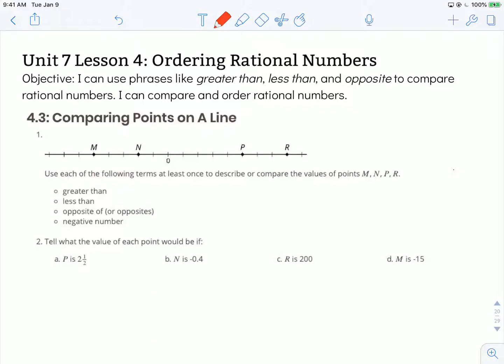The objective states: I can use phrases like greater than, less than, and opposite to compare rational numbers. I can compare and order rational numbers. We're looking at Activity 4.3, Comparing Points on a Line.